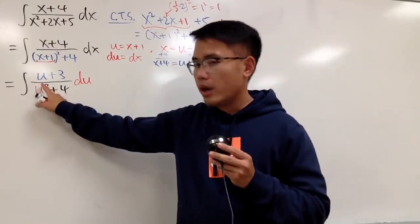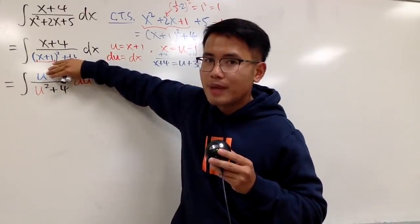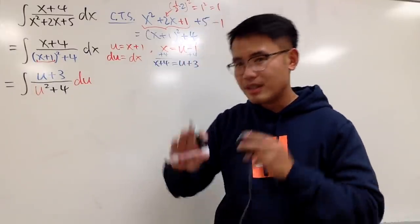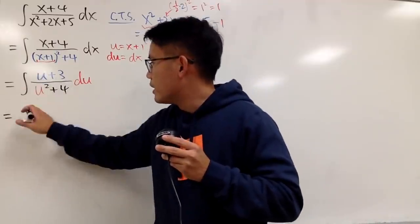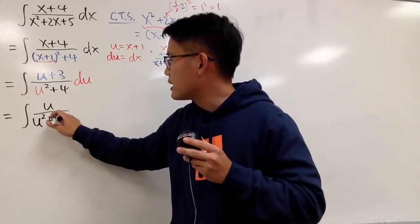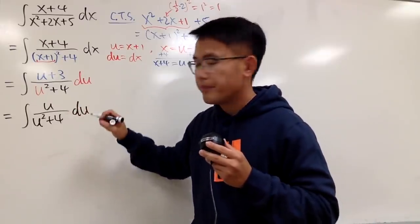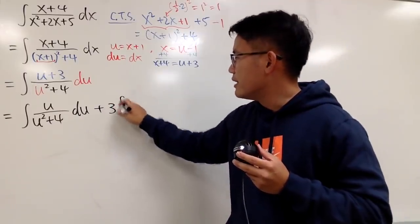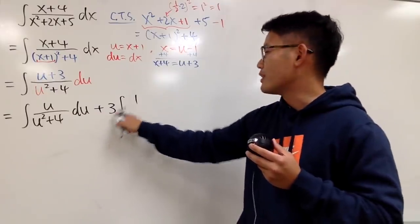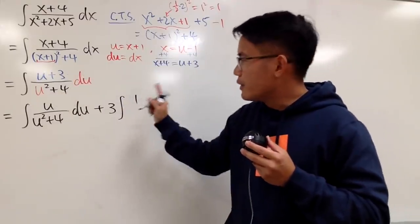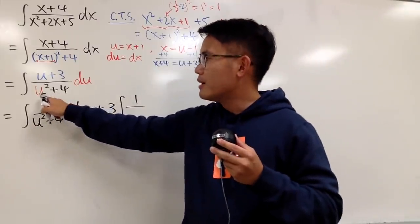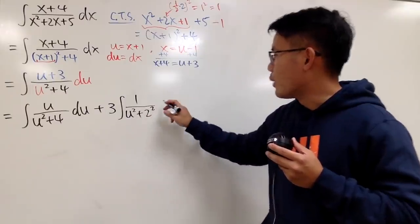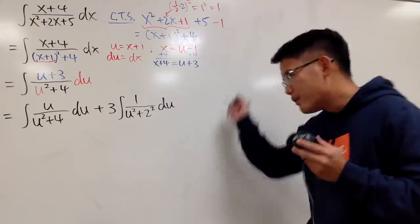Now I will split the fraction, because I notice we can integrate u over (u squared plus 4) separately, and also a constant on the top over that same denominator. So separating the integrals: the first integral is u over (u squared plus 4) du. For the second one, we have 3 on the top — that's just a constant multiple, so I bring the 3 to the front, giving 3 times the integral of 1 over (u squared plus 4) du. For this situation with a constant on top and a sum of two squares on the bottom, I write u squared plus 4 as u squared plus 2 squared.